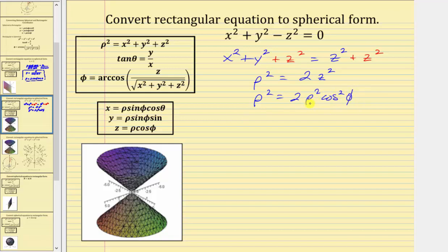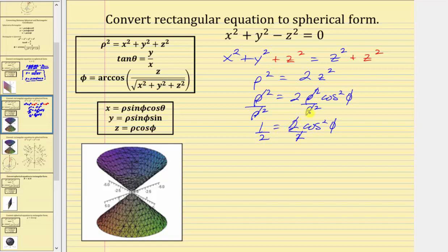Now let's divide both sides by rho squared. Simplifying, the left side simplifies to one, and the right side is two cosine squared phi. Let's solve for cosine squared phi by dividing both sides by two. Simplifying, we write this as cosine squared phi equals one half. So it's probably best to stop here and give the equation in spherical form as cosine squared phi equals one half.